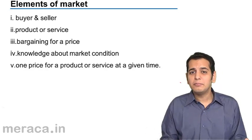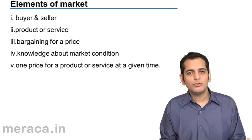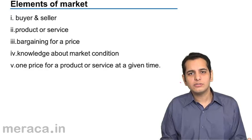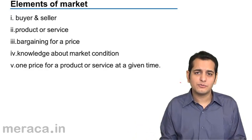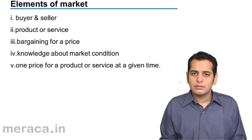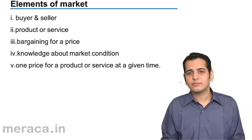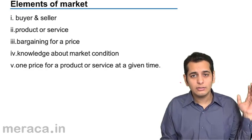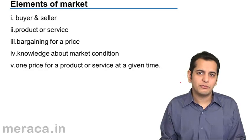Now we see the elements of a market. Since we know what a market is — a place where buyers and sellers meet and transact — let's understand what are the characteristics, what are the elements, what are the features of a market.